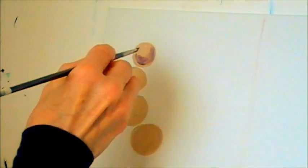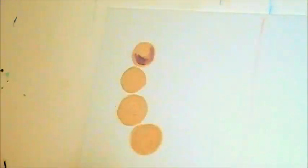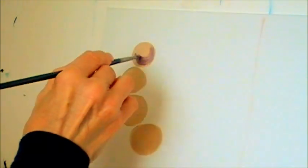So the next step is to put the darks on the pearl. It is a mixture of phthalo green and alizarin crimson. Make it a little like that, and soft.